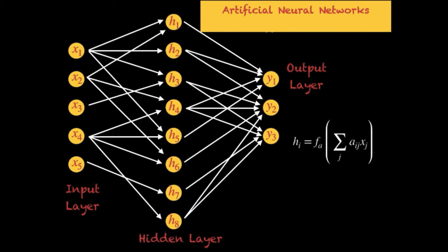As the expression on your screen shows, h_i — the i-th value of the hidden layer — is equal to fa, some activation function, whose argument is the summation over j of a_ij times x_j. The term a_ij times x_j is a linear transformation. So this step takes all the input values, makes them undergo a linear transformation, and then passes that value through the activation function fa.